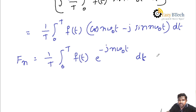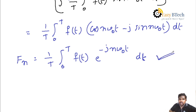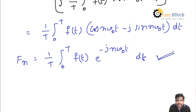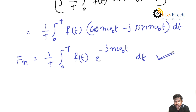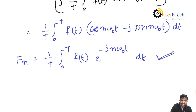This is the formula for the exponential Fourier series coefficient Fn. First find the Fn value, then replace it in the series to find the exponential Fourier series.